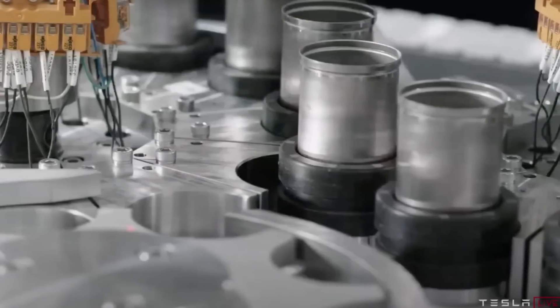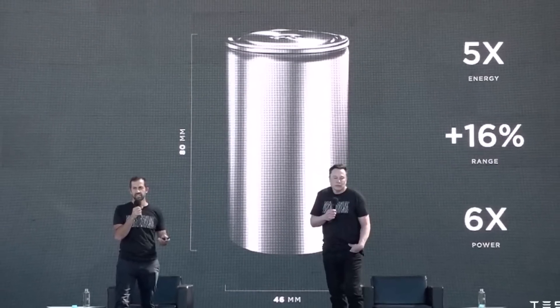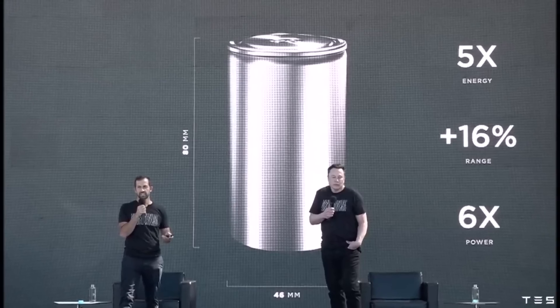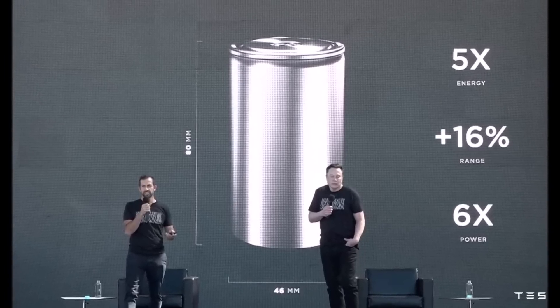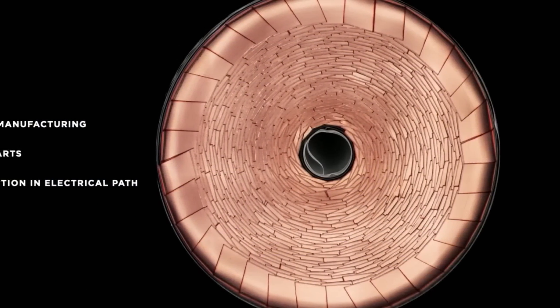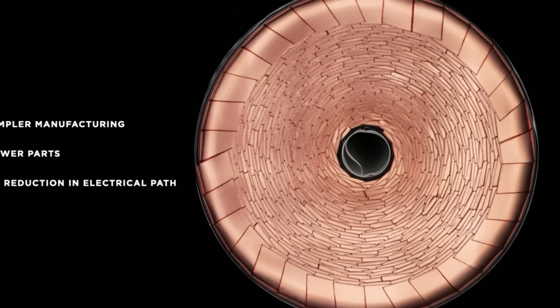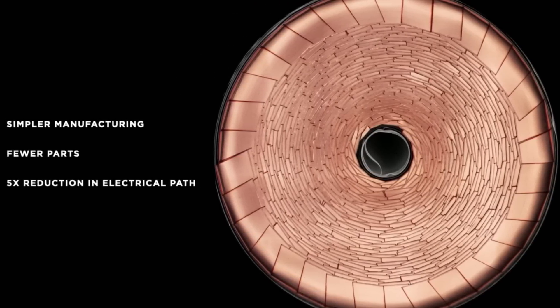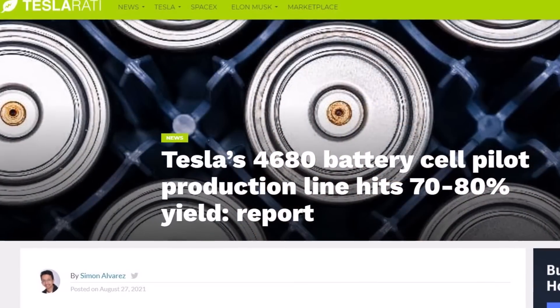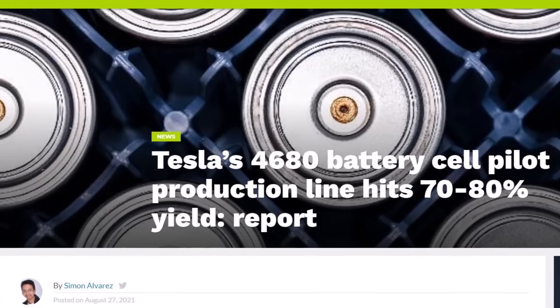Tesla Senior Vice President of Powertrain and Energy Engineering Drew Baglino emphasized that the challenges in the Kato Road facility are an engineering program and not a science issue. This meant that with enough work and optimization, Tesla should be able to address the calendaring issue of the dry battery cells.